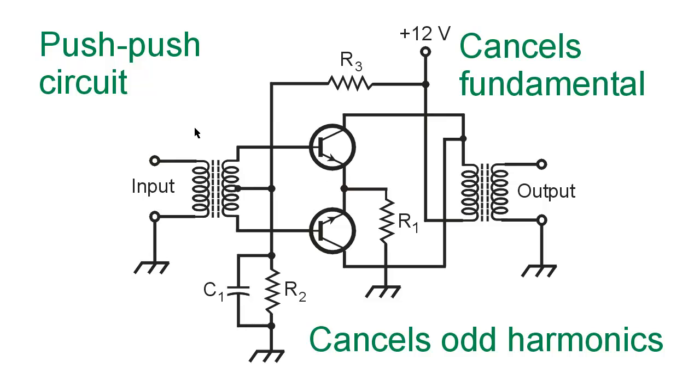So if you want a frequency doubler in a radio frequency circuit, for example a frequency modulation transmitter, or if you just want to get a higher frequency than you can get with your input devices, you can use a push-push circuit to do that. And once again, if you choose the component values wisely, you can make it amplify. So you have what they call a push-push amplifier or an active frequency doubler.